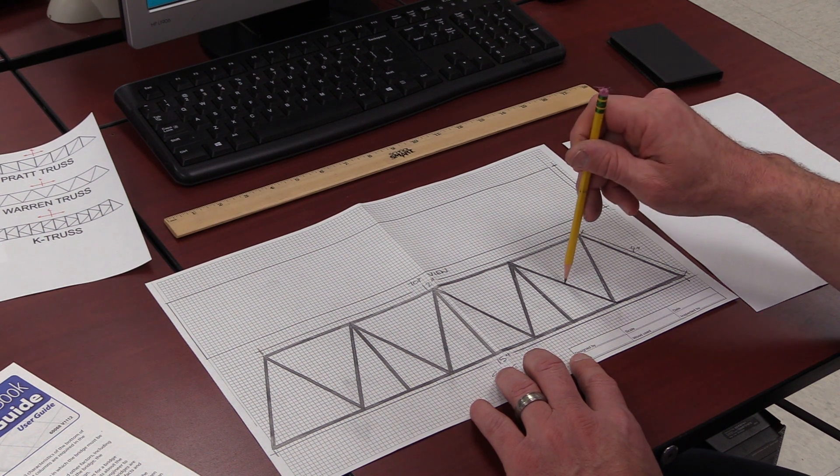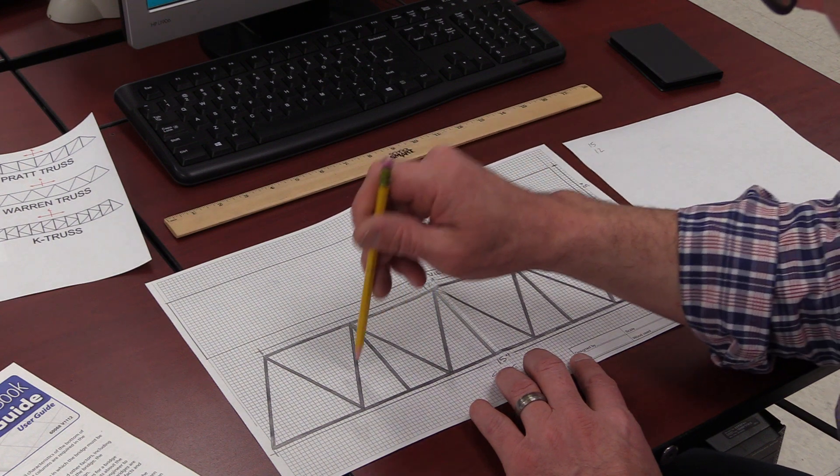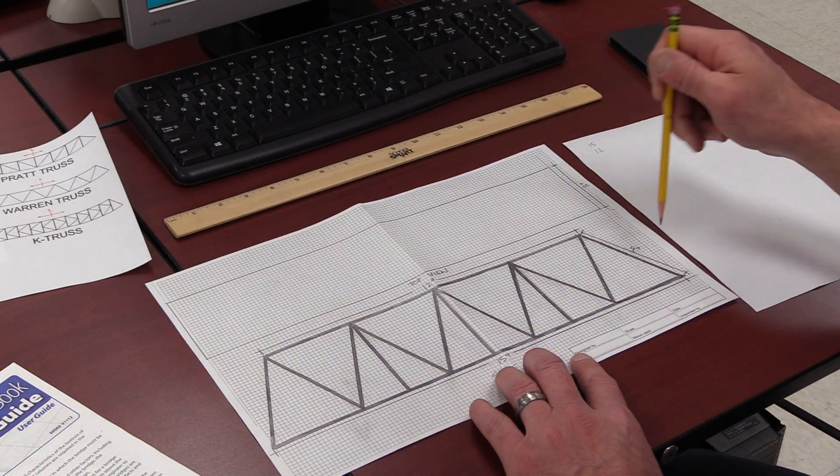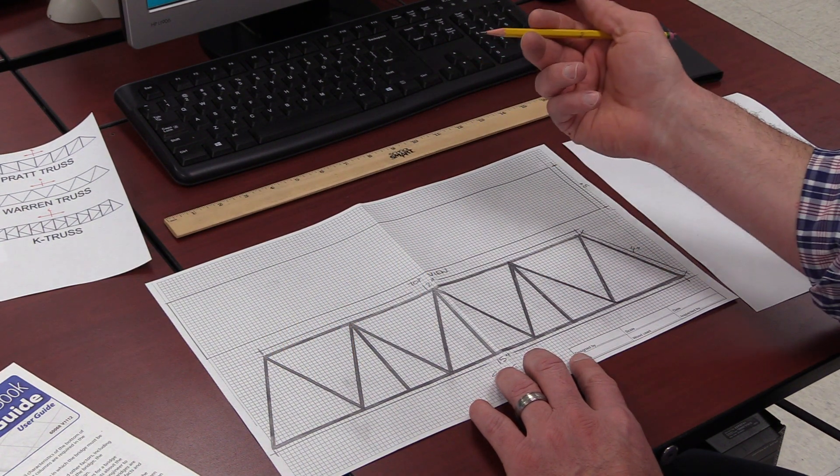So I'm going to say 1, 2, 3, 4, 5, 6, 7, 8, 9, 10. I've got 10 of these web members that are four inches long. So I know that's 40 inches I've got to account for.